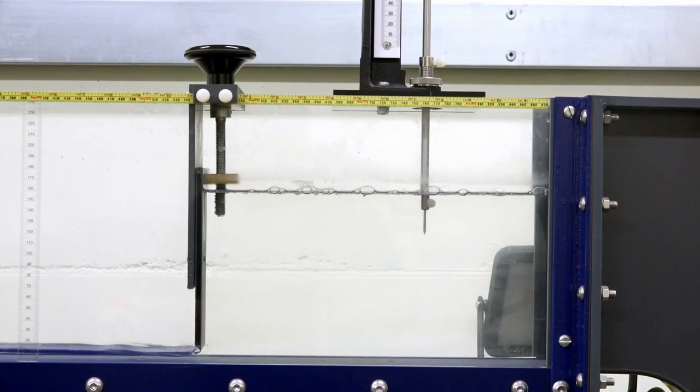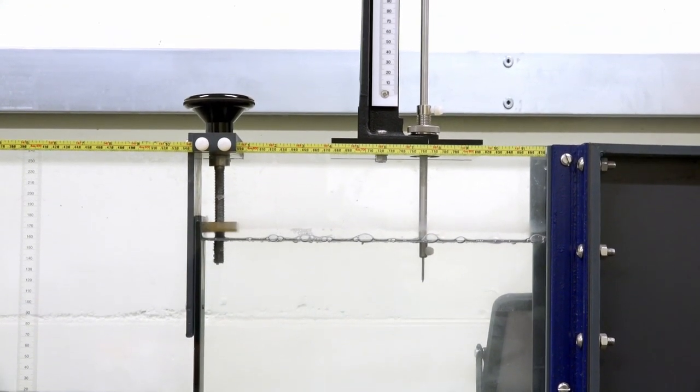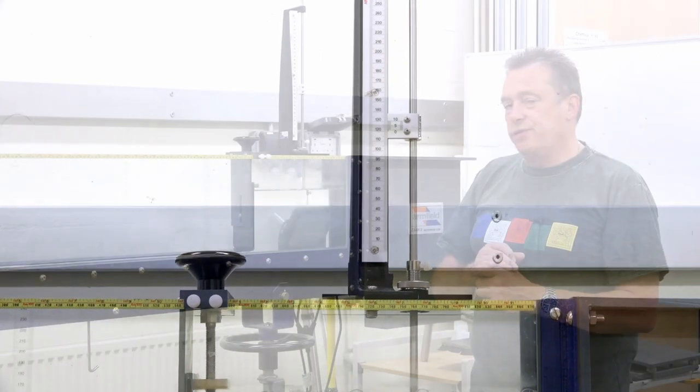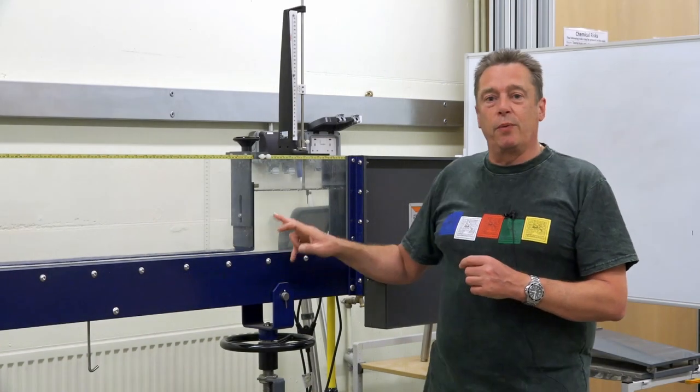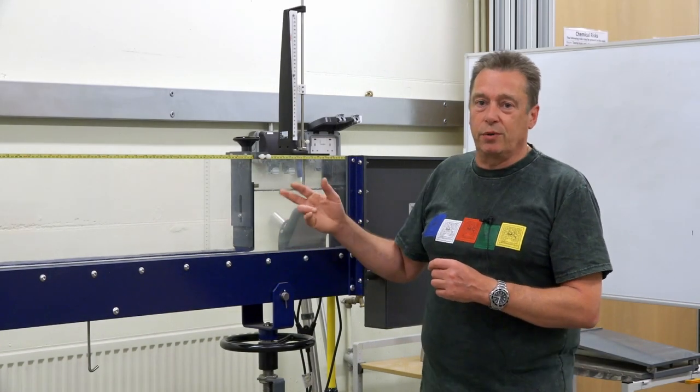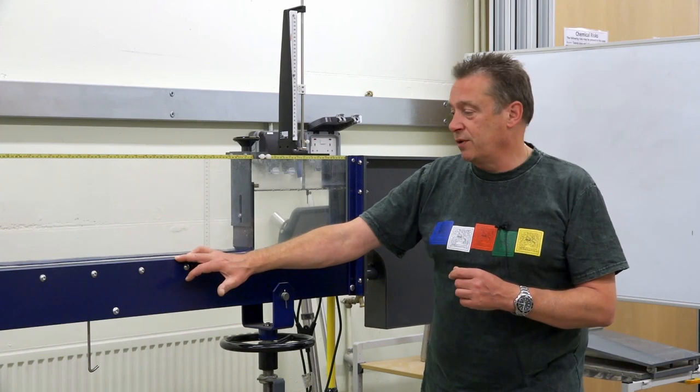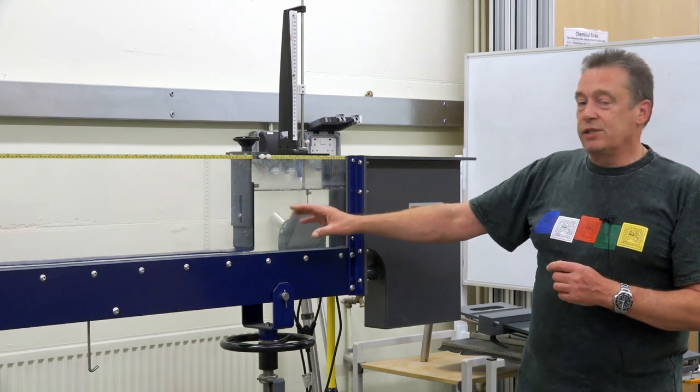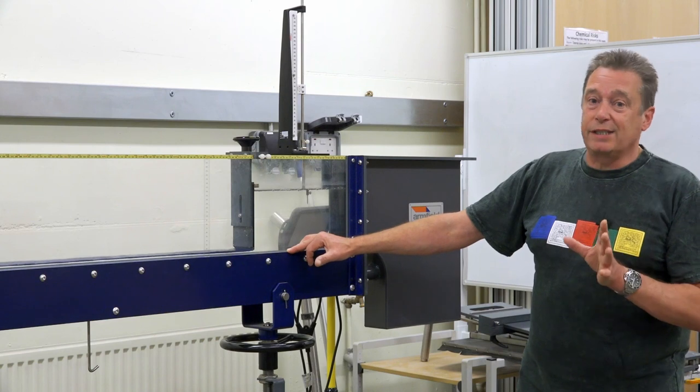We can measure these at various points and do calculations. Some calculations involve Froude numbers, which have no units but determine whether the flow is subcritical or supercritical. If it's deep and slow-moving, that's subcritical flow with a Froude number less than one.